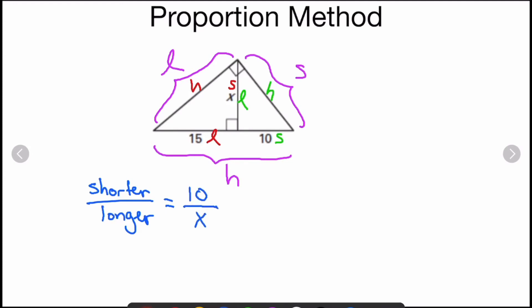I'm going to move over to the medium sized triangle. The shorter is the X and the longer is the 15. So I've got my proportion right here, and that's what I need to solve.